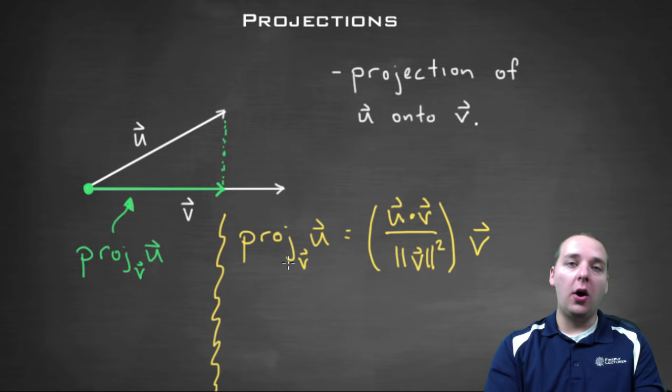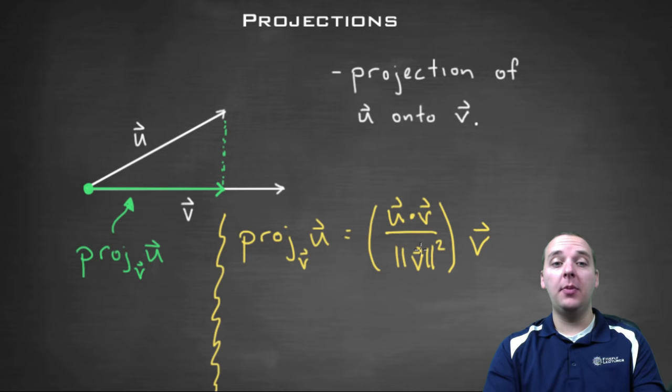So notice the dot product is a scalar. And the norm is a scalar. So a scalar divided by a scalar is another scalar. And so you're going to scale v by a certain amount. And this happens to be just the right amount to give you this green vector right here. And again, let me reiterate, we'll talk about why this is important towards the end of this video.